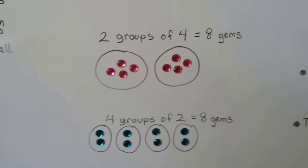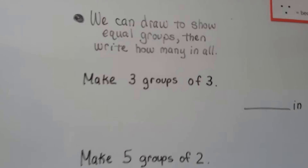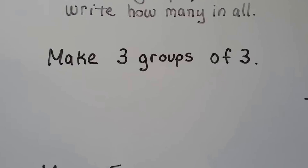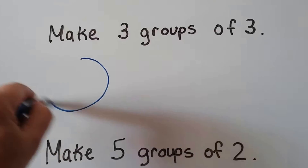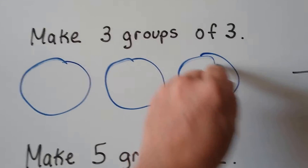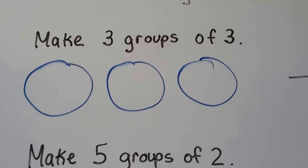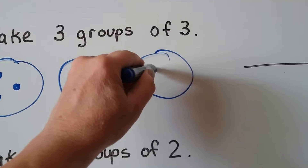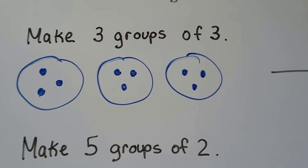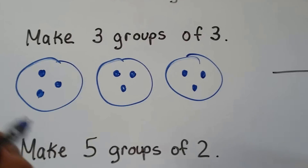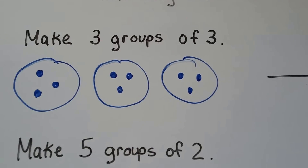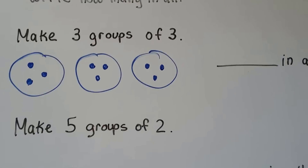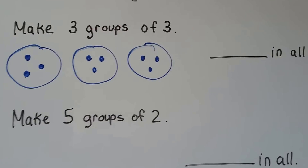We can draw to show equal groups and then write how many in all. It says make three groups of three. First I'm going to make my big circles: one, two, three — three groups. Now I'm going to put three inside each: one, two, three; one, two, three; one, two, three. You can use pennies or anything, but start by making your big circle groups.